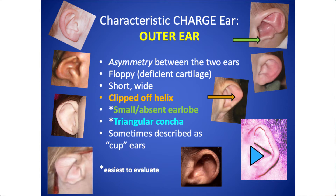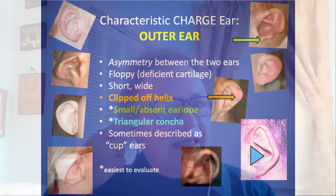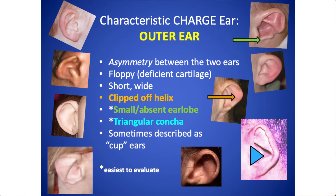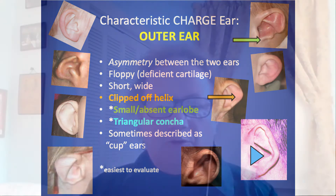The ears are often very floppy because of deficient cartilage — one mom described her child's ears as kind of blowing in the wind. As far as their shape, they're often short and wide and there can be a cutoff helix. The helix is the outer fold of the ear, and the yellow arrow here points to an ear that is missing that outer fold. One of the most common and easiest-to-evaluate features is a smaller or absent ear lobe, as seen with the green arrow. Another thing we describe is a triangular concha — because the anti-helix, the inner fold, can be very prominent, you can end up with a very significant triangular shape to the inside of the ear, as shown by the blue triangle.